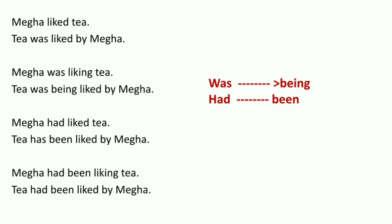Now let's move to past tense. 'Mega liked tea' — simple past — becomes 'Tea was liked by Mega' (since 'tea' is singular; if it were 'tea and coffee' it would be 'were'). 'Mega was liking tea' becomes 'Tea was being liked by Mega' — remember, with is/was/are/were use 'being,' not 'been.' Third case: 'Mega had liked tea' becomes 'Tea had been liked by Mega' — tense kept same as 'had.' Fourth case is also 'Tea had been liked by Mega' — no further helping verb added at the last level. Always use the third form.